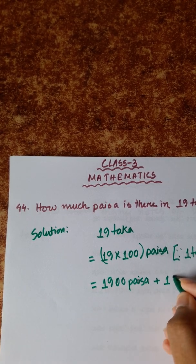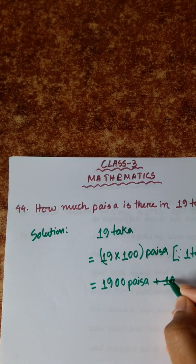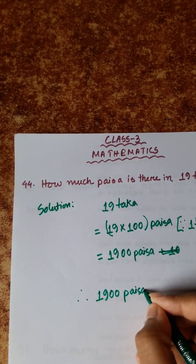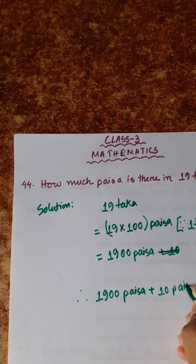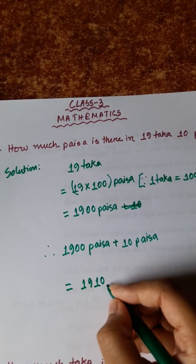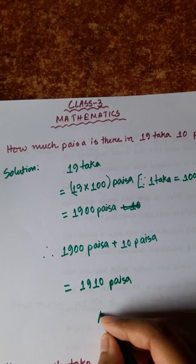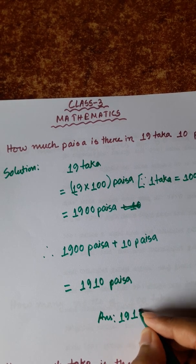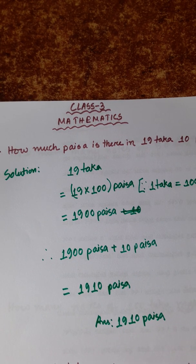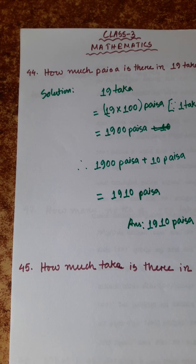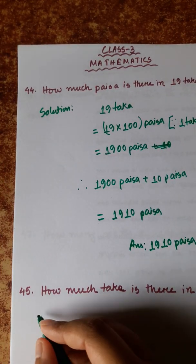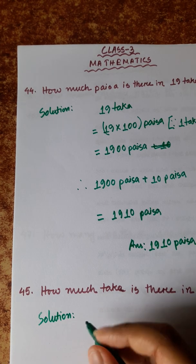Now we add the remaining 10 paisa: 1900 paisa plus 10 paisa equals 1910 paisa. So the answer is 1910 paisa.